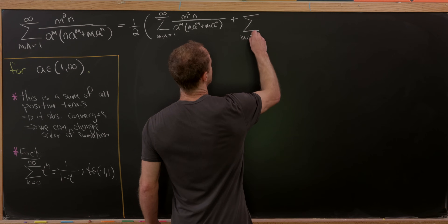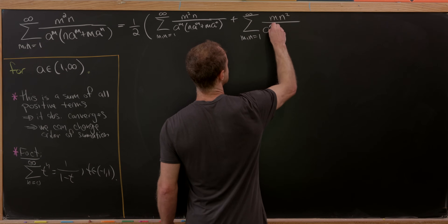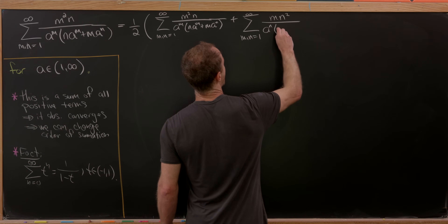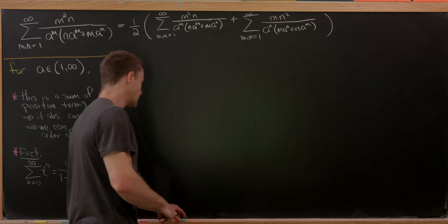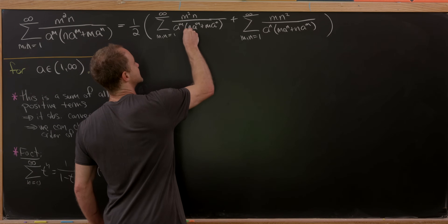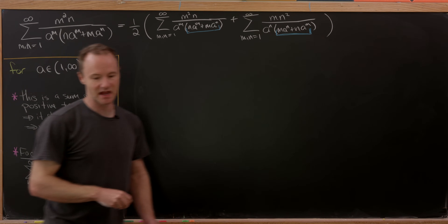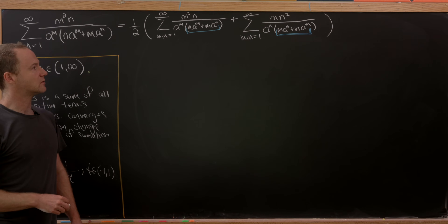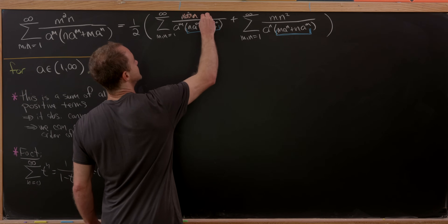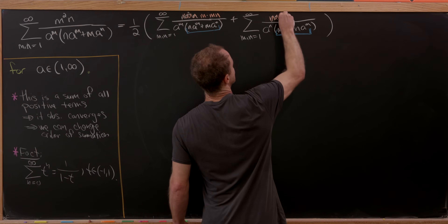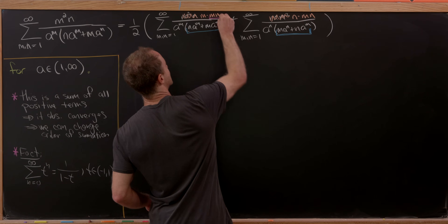After exchanging m and n, the second sum becomes m n squared over a to the n times m a to the n plus n a to the m. The expression in parentheses in the denominator is exactly the same across both sums — just reordered. The numerators are m times mn and n times mn respectively, so we can factor out mn from both.